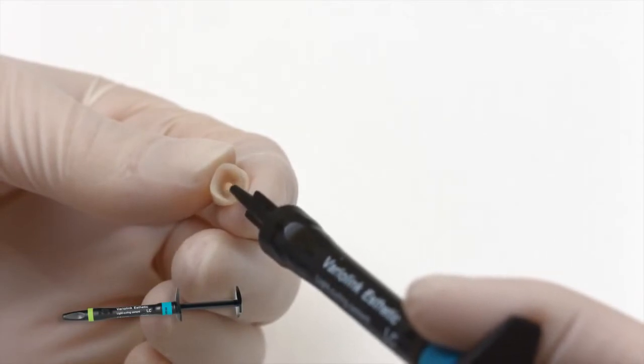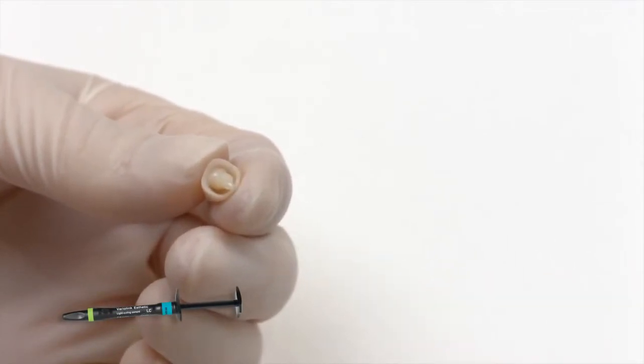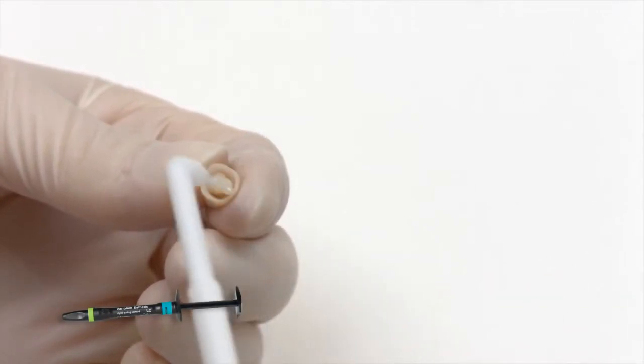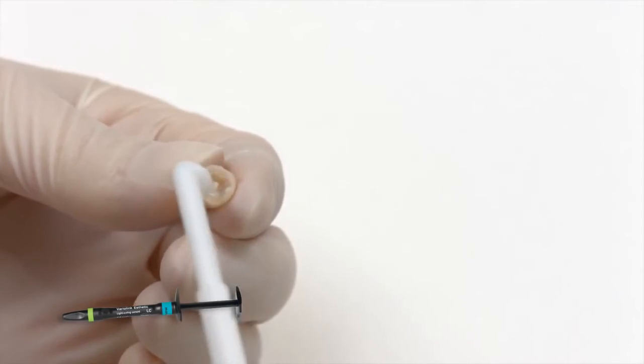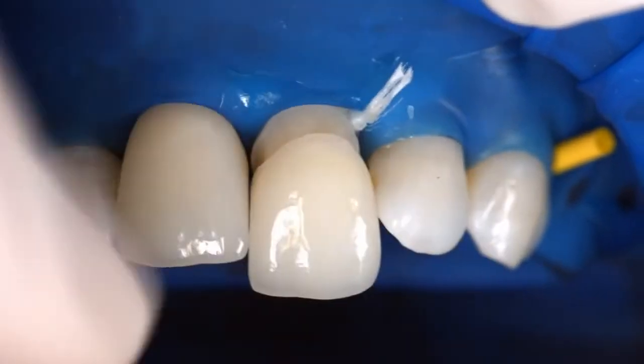Apply the desired amount of Variolink Aesthetic LC directly from the syringe onto the restoration. Seat the restoration and retain it in place exerting uniform pressure.